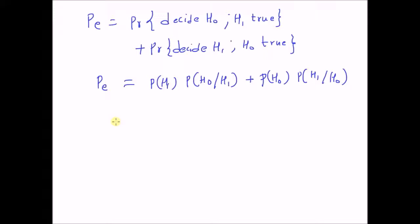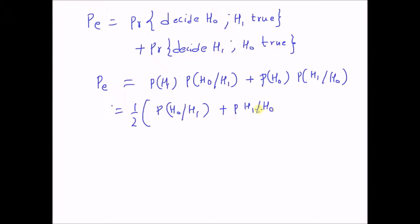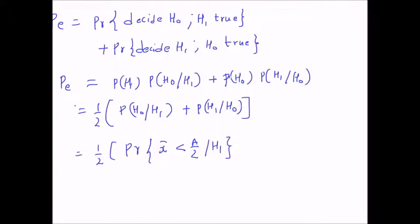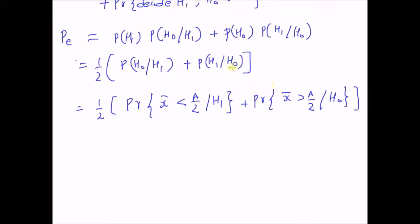Since we assume P(H0) = P(H1) = 1/2, we have Pe = (1/2)·[P(H0|H1) + P(H1|H0)]. By definition, P(H0|H1) is the probability that the test statistic x̄ is less than A/2 under H1 — that is the probability of making a mistake. And P(H1|H0) is the probability that x̄ is greater than A/2 when H0 is true, which is the probability of a false alarm.